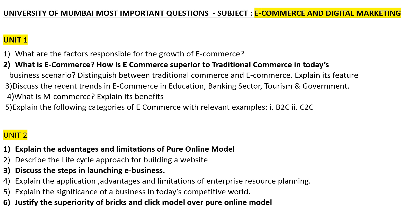From unit number two: first, explain the advantages and limitations of the pure online model — this is one of the important questions. Second, describe the life cycle approach of building a website. Third, explain the steps in launching an e-business — also an important question. Question four: explain the application, advantages, and limitations of ERP, that is Enterprise Resource Planning, and explain the significance of e-business in today's competitive world.